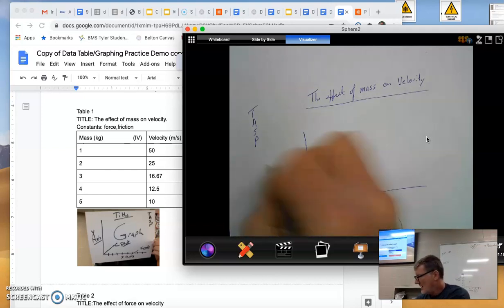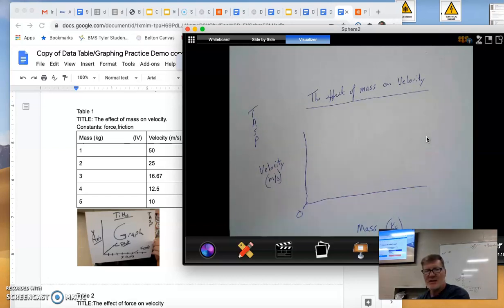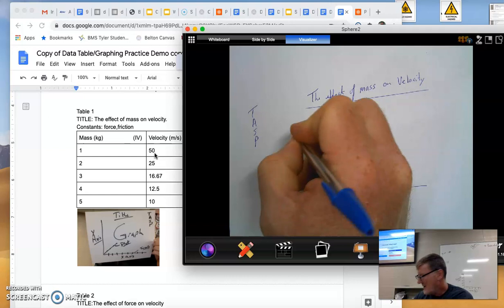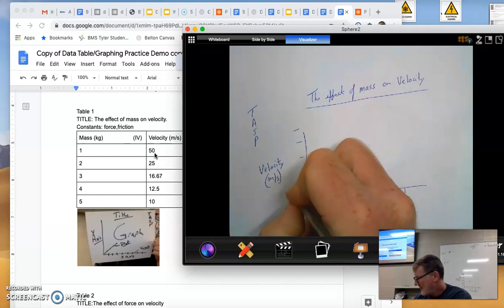So I have my variable with the units. Then my y-axis is velocity. Meters per second are the units. As you can see over here, my masses go up to 5. So I'm going to set this up. Space out 5. Then my velocities go from 0 to 50. So I'm going to again space out 5. But I'm going to count my tens. 10.